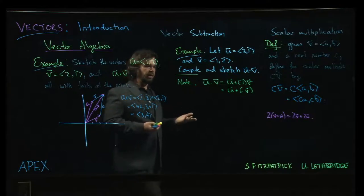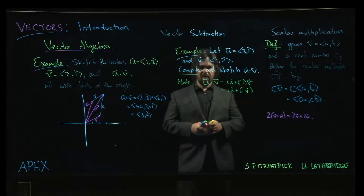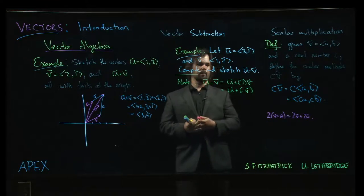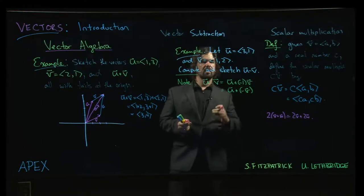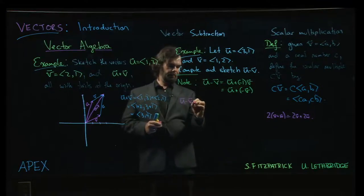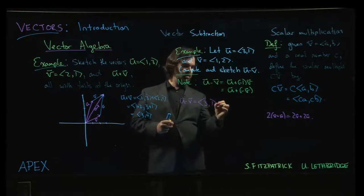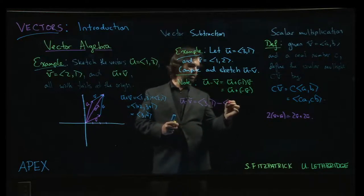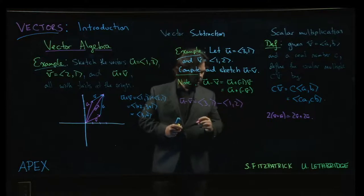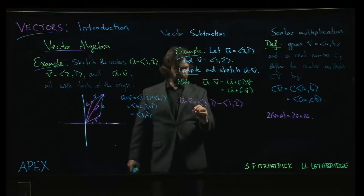So ultimately all this means is that to subtract two vectors you subtract the components. In this case, u minus v, so it's going to be 3, 1 subtract 1, 2. And so we're just going to do 3 minus 1 and 1 minus 2, but note that that is the same and sometimes it is useful